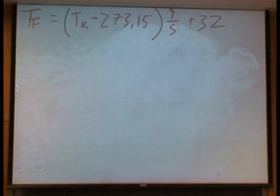And then we can go directly from Kelvin to Fahrenheit. So we want to go T sub F equals T sub K minus 273.15 times 9 fifths plus 32.